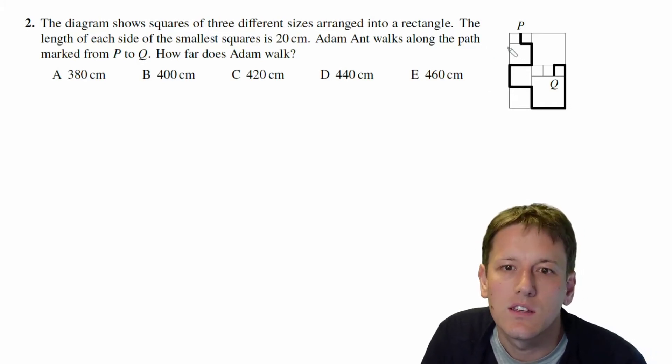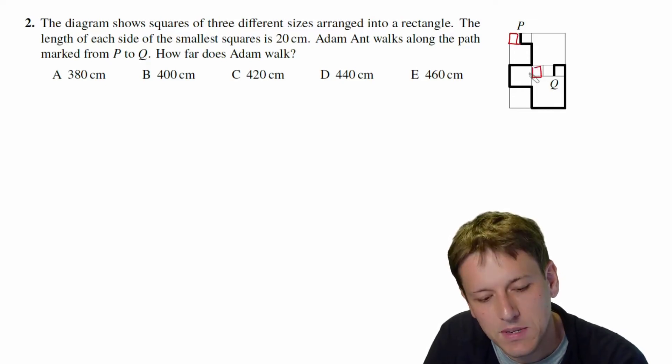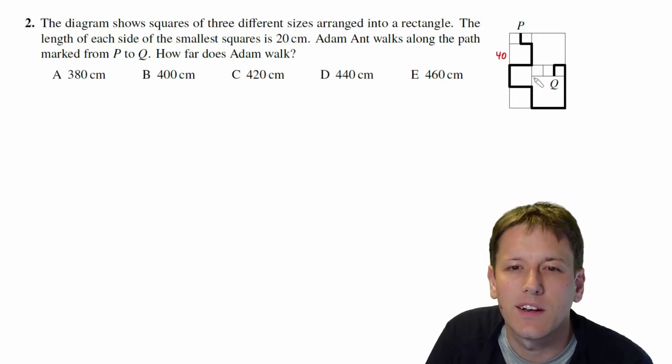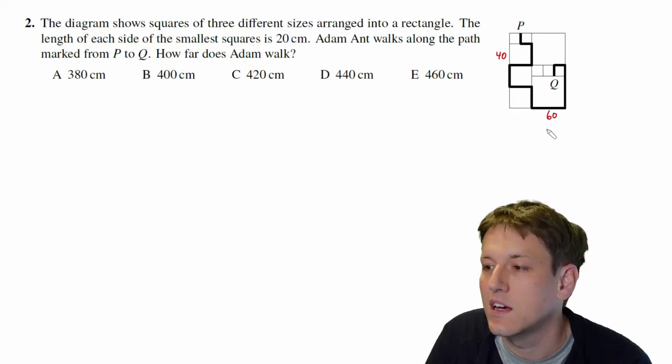So we've got three different sizes of squares and it says the smallest are 20, so these ones must be the smallest size squares. They must be equal and we can see the other two sizes here. This side length would be two of the smaller squares so this would be a side length of 40, and then the final size of square we've got, this large one here, and we can see that that lines up against three of the smaller squares so that must be of length 60.